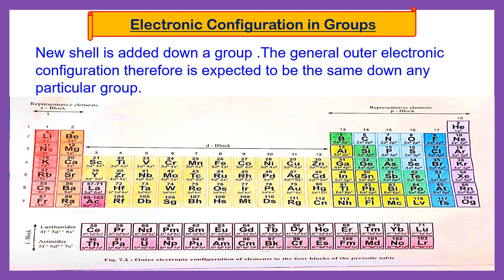The expected electronic configuration remains the same as we move down the group. For group number 2, beryllium has outer electronic configuration 2s2. Moving down to magnesium, it has 3s2 — the same electronic configuration, only the shell number changes: 2s2, 3s2, 4s2, 5s2. The same electronic configuration holds for any particular group.